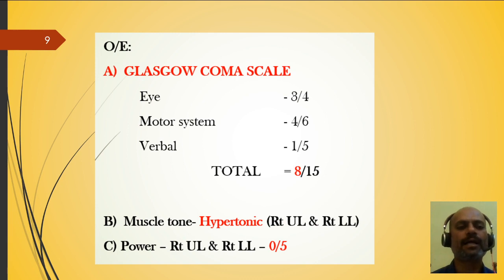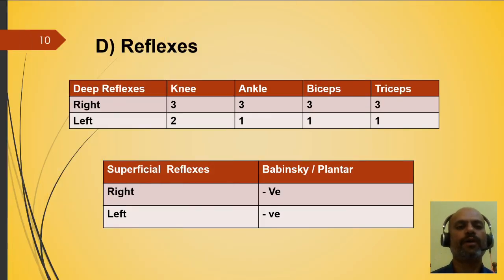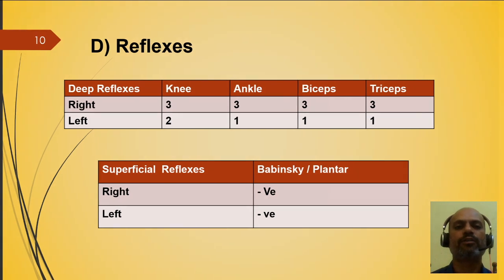On examination: Glasgow Coma Scale — Eye 3/4, Motor 4/6, Verbal 1/5, Total 8/15. Muscle tone was hypertonic on the right side. Power on the right side was 0 out of 5. Deep reflexes on the right side were 3; left side knee was 2; ankle and biceps were 1. Superficial plantar or Babinski sign was negative bilaterally.